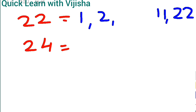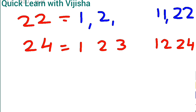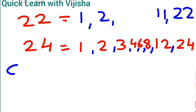Now coming to 24. 1 × 24 = 24, 2 × 12 = 24, 3 × 8 = 24, 4 × 6 = 24. So these many factors are for 24. We have already done factor questions — do check my previous video also, children.